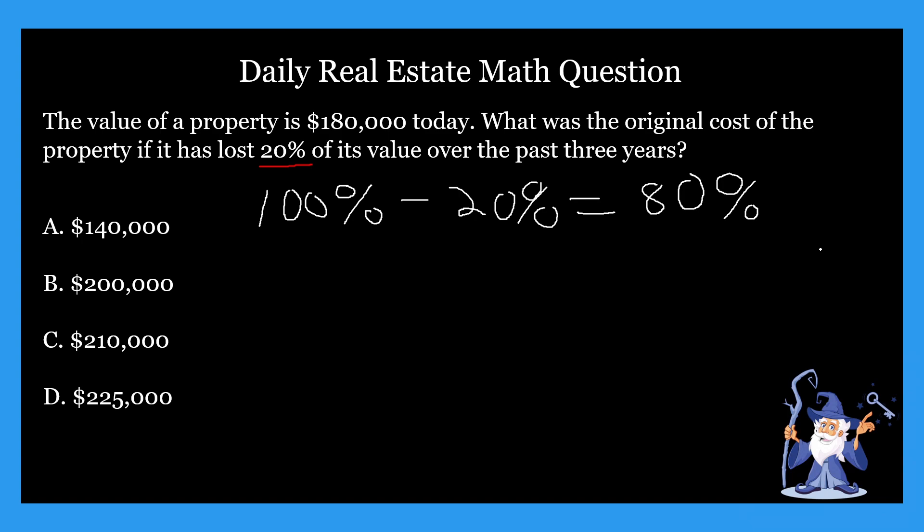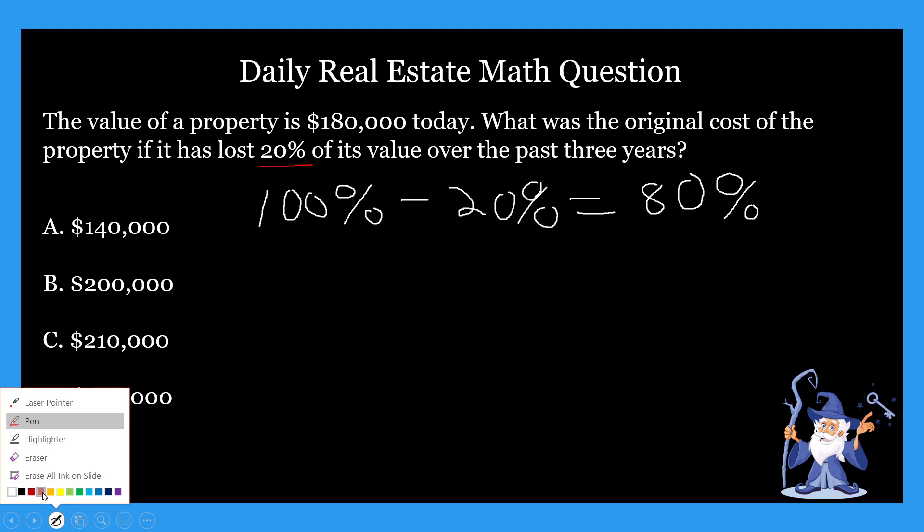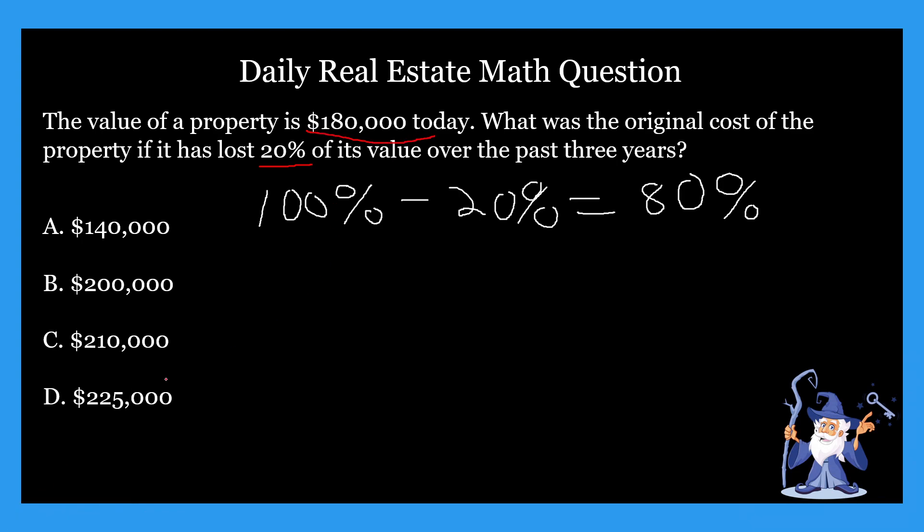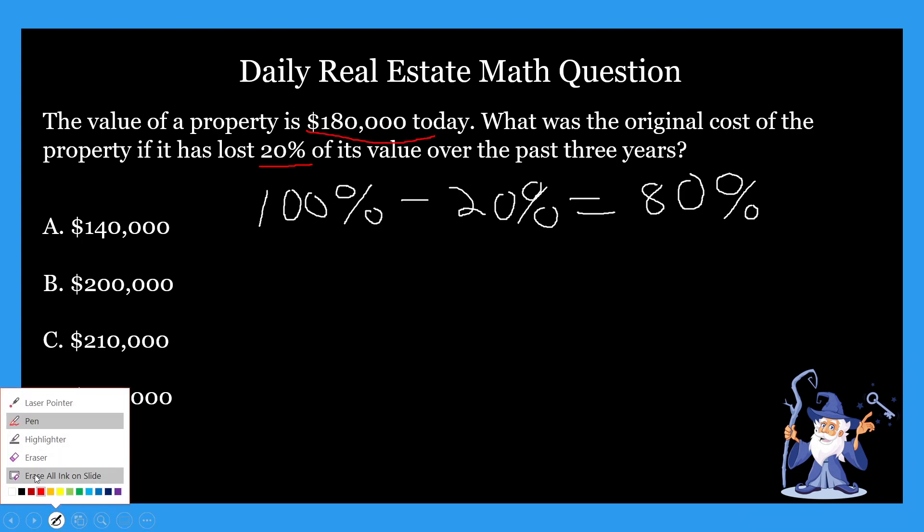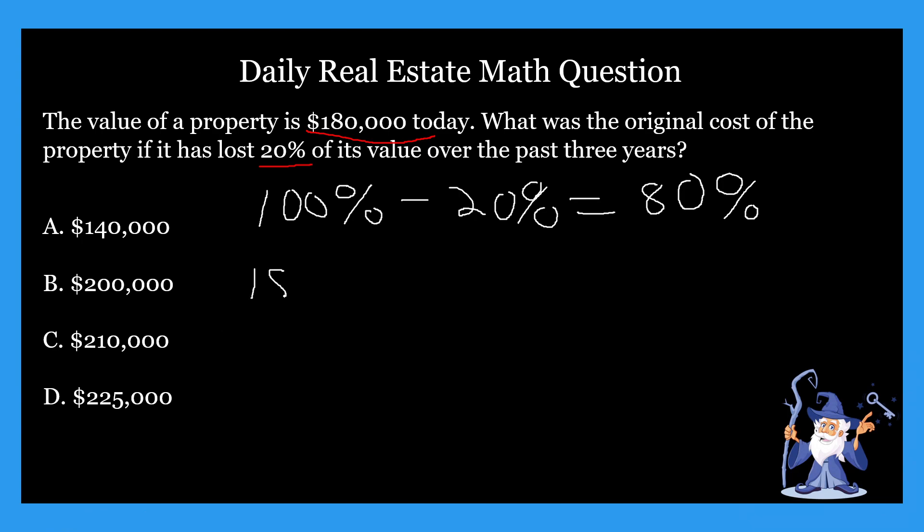So from there, what we have to do is take today's price, which is this $180,000. So go ahead and underline that real fast. We take that $180,000, and then from there, what we have to do is divide by 80% or 0.8.